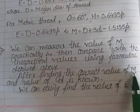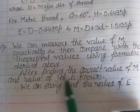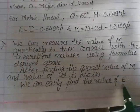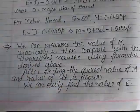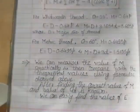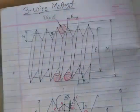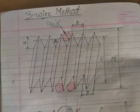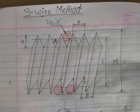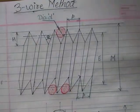Practically, we measure the over-wire diameter M, and knowing D, we can directly find the effective diameter E. This is the three-wire method — one of the very important questions for the MQE subject. In almost all exam papers, this derivation comes for 10 marks.